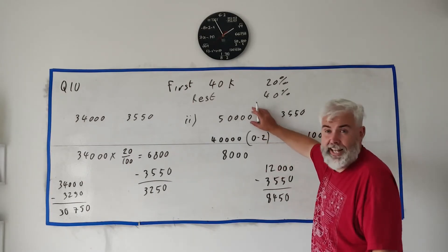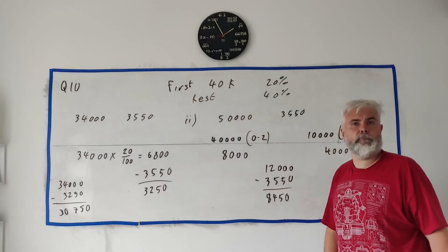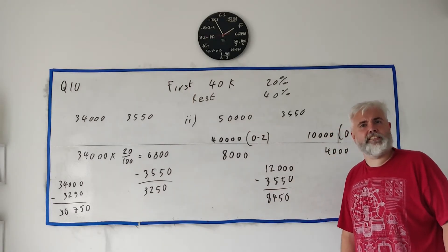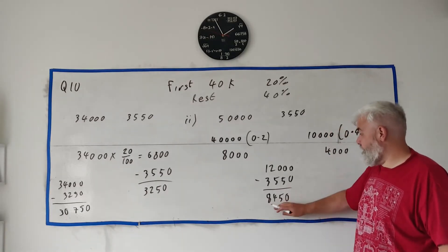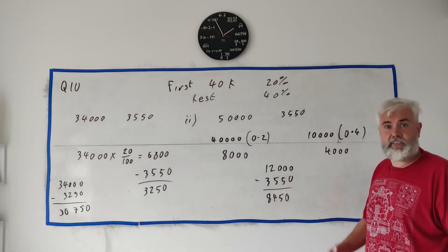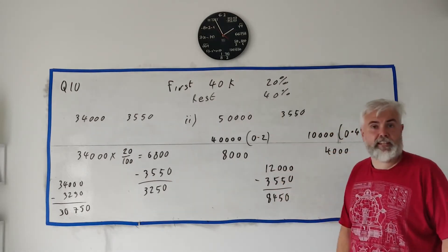If I take €12,000 minus €3,550, I get €8,450. That's the total amount of tax Caroline has to pay. But remember, they did ask for the tax in this question. This is your final answer here. If they wanted her income, you would just take this number minus that.